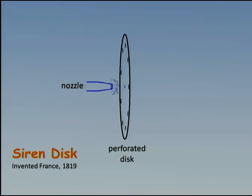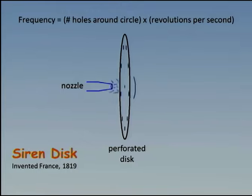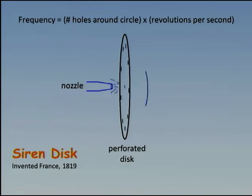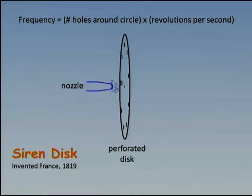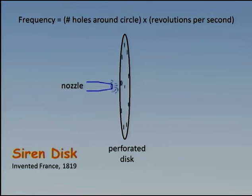We can estimate the frequency of our little puffs of air, which would be the frequency of the sound, if we know the number of holes going around the circle and how many revolutions per second the disc is making. Take the number of holes going around once, multiply by how many times you go around per second, and that will give you the frequency.